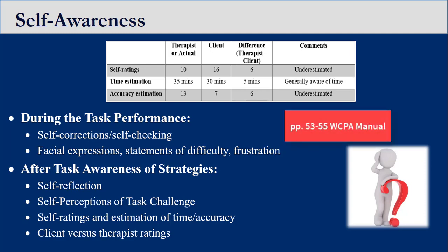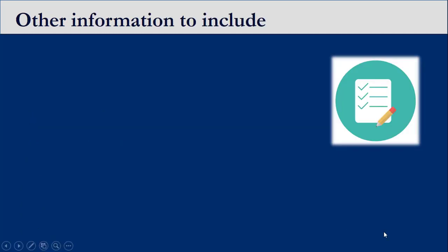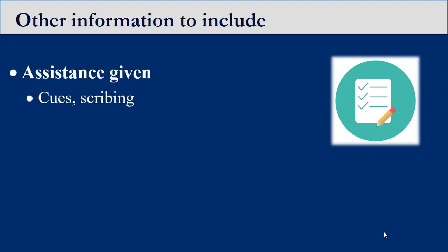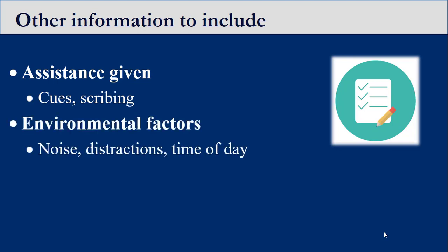Pages 53 to 55 in the WCPA manual provide further information on client self-awareness. Additional information that may be included is as follows: assistance given, for example direct cues or scribing for patients with difficulty with handwriting; and environmental factors that could affect performance, for example the atmosphere, interruptions, or self-generated distractions like the use of a smartphone or initiating conversation.